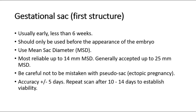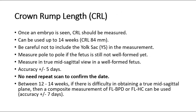Once an embryo is seen, CRL (crown-rump length) should be measured. It can be used up to 14 weeks. Be careful not to include the yolk sac in the measurement. Measure pole to pole if the fetus is still not well formed. Measure in true mid-sagittal view in a well-formed fetus. Accuracy is plus or minus 5 days.